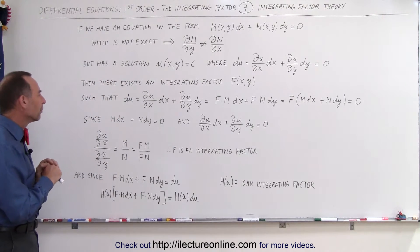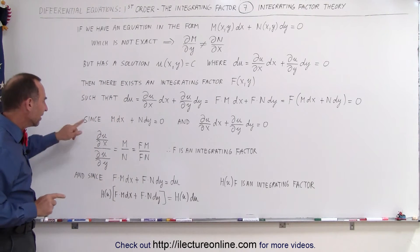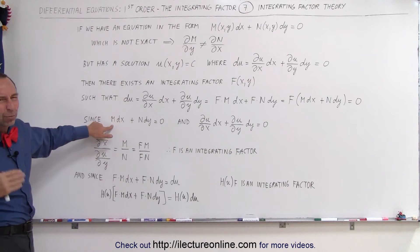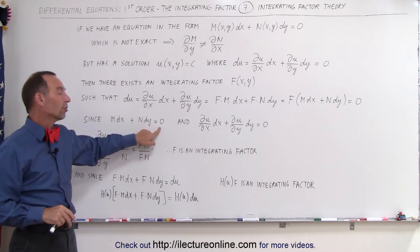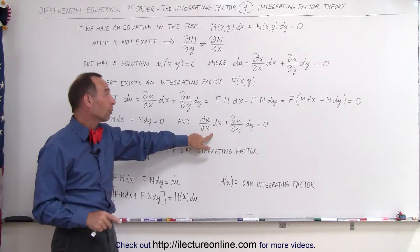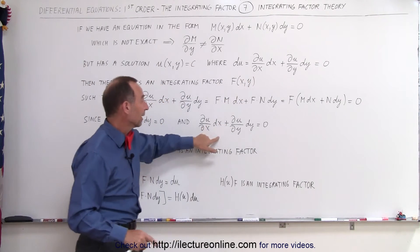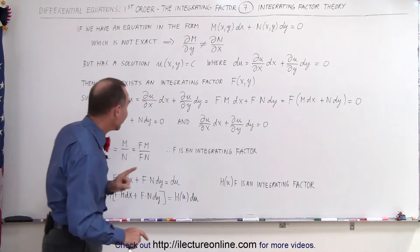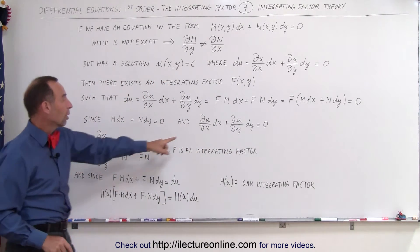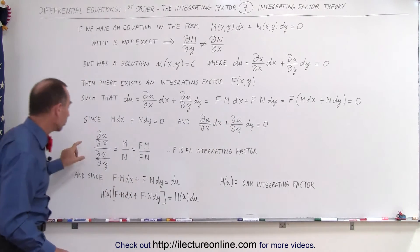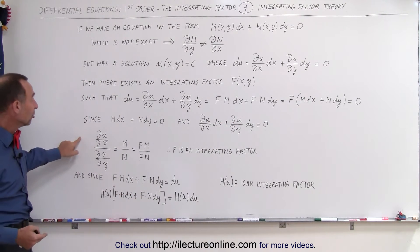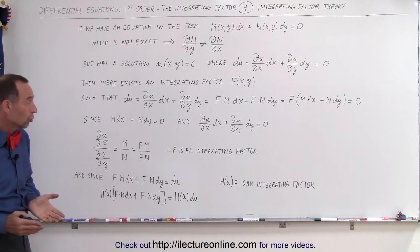All right, what we can then say also is, since, and this is kind of the proof, since we know that M dx plus N dy equals 0 and we know that writing it in this form which is equal to the du is also equal to 0, we can then say that the ratio of ∂u/∂x divided by ∂u/∂y must equal the ratio of M divided by N. That must be true.